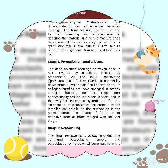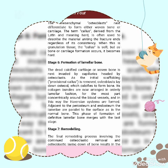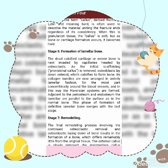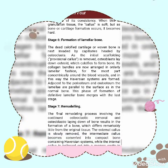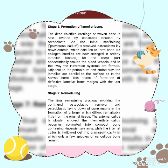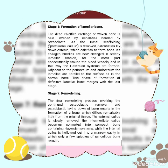Stage four is formation of granulation tissue: following the phase of demolition there is ingrowth of capillary loops and mesenchymal cells derived from the periosteum and the endosteum of the cancellous bone. These cells have osteogenic potential and together with newly formed blood vessels contribute to granulation tissue formation. Stage five is woven bone and cartilage formation: the mesenchymal osteoblasts next differentiate to form either woven bone or cartilage. The term callus, derived from the Latin meaning hard, is used to describe the material uniting the fracture; when this is granulation tissue the callus is soft, but as bone or cartilage formation occurs it becomes hard.